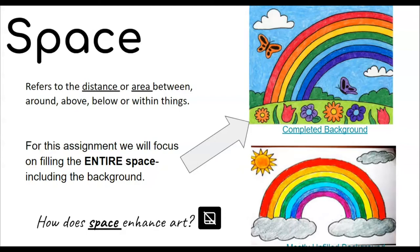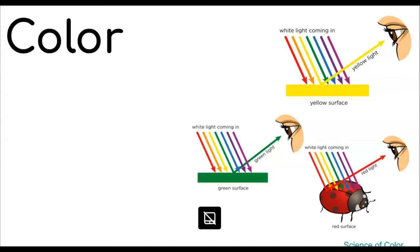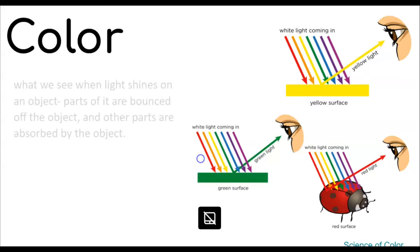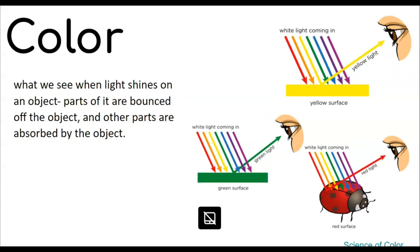The last thing we're going to talk about is color, and that's going to be our big focus for this project. What is color anyway? Well, it's what we see when the light shines on an object. Parts of it are bounced off the object and other parts are absorbed by the object, and it appears to us as color. So we see all of those rays of light going towards the yellow, green, or red surface, and all of the colors are absorbed except for one color which is bounced back towards your eye — that is the color that you can see. What do you think the world would be like without color?